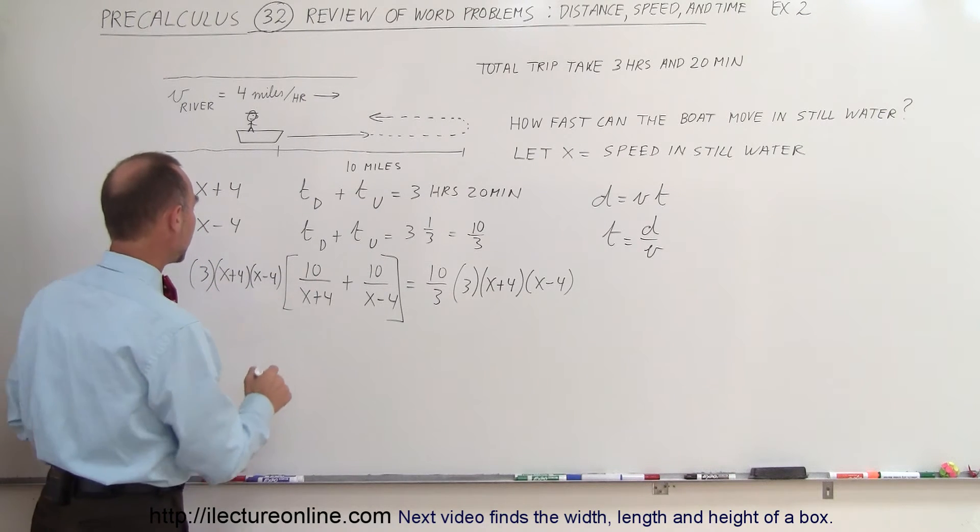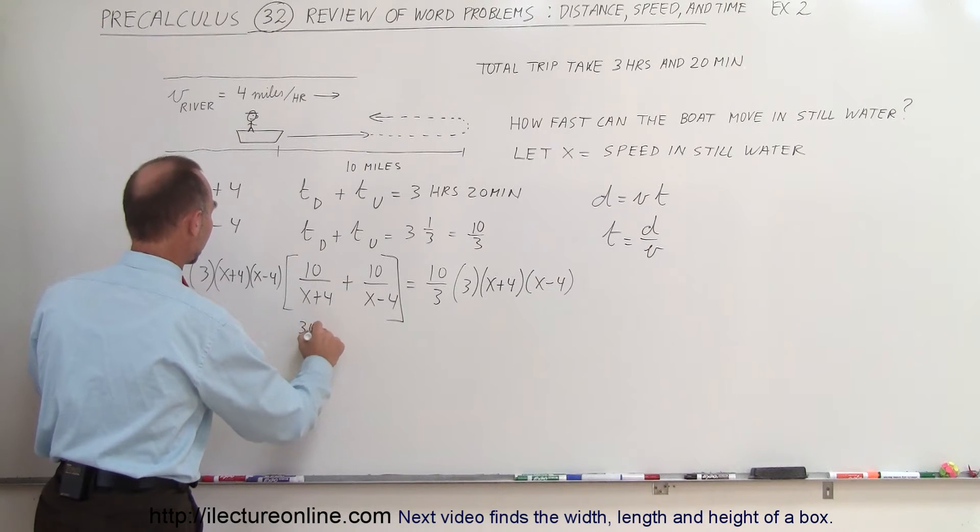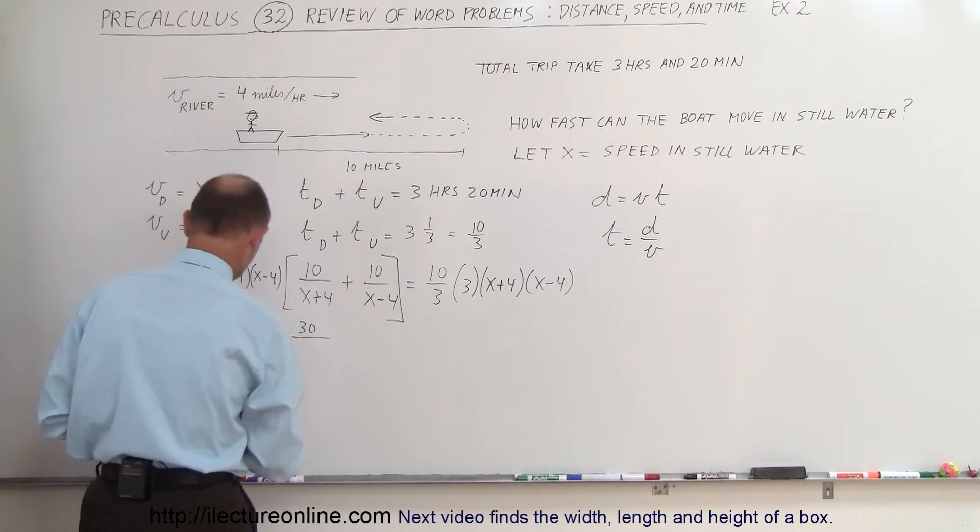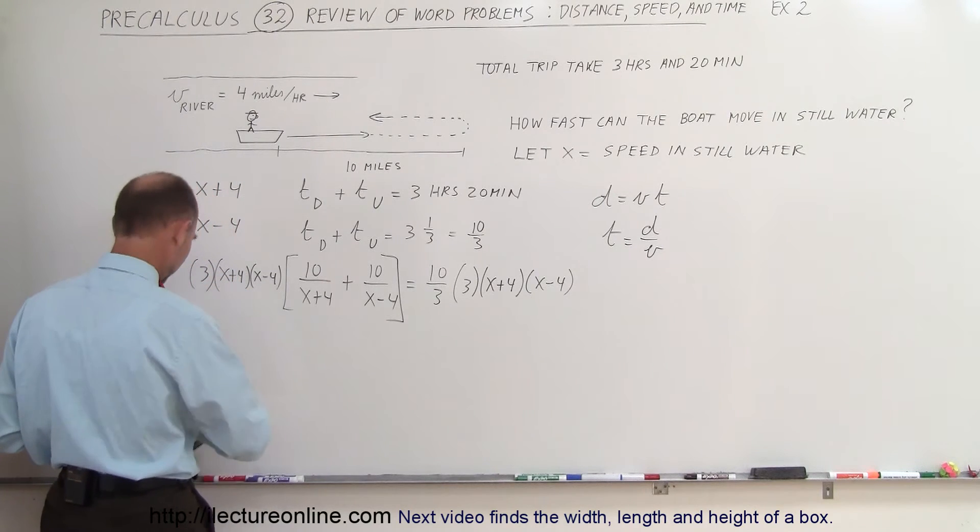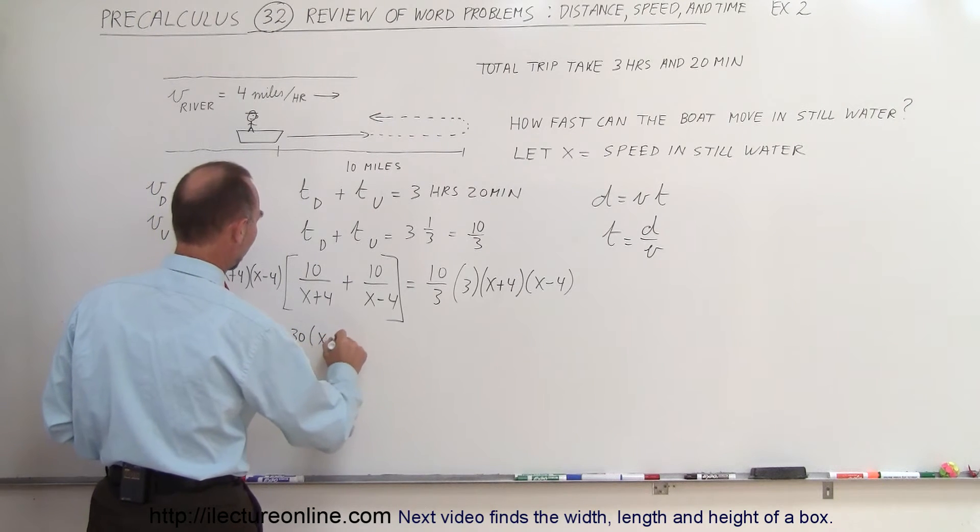Notice we multiply with the first one here, x plus 4 cancels out, 3 times 10 is 30. 30 times, not divided by, we're trying to get rid of the denominators, so the x plus 4 cancel out, so we're left with 30 times x minus 4.